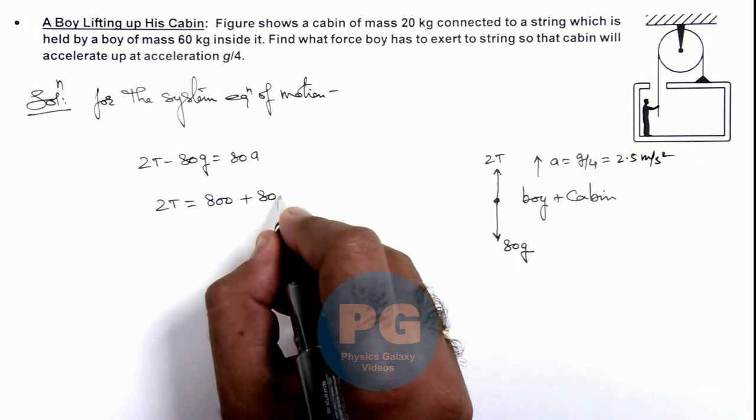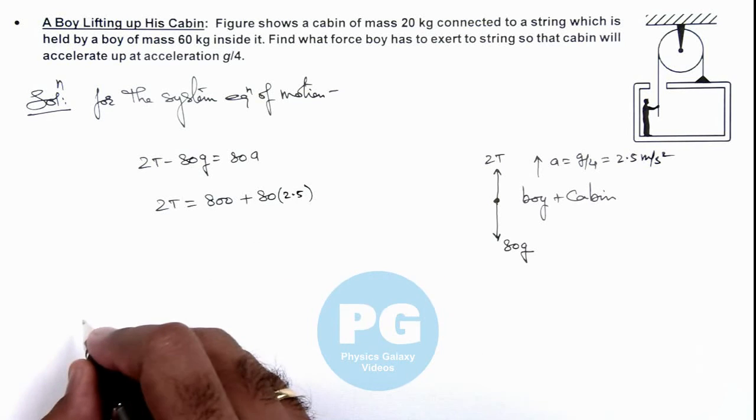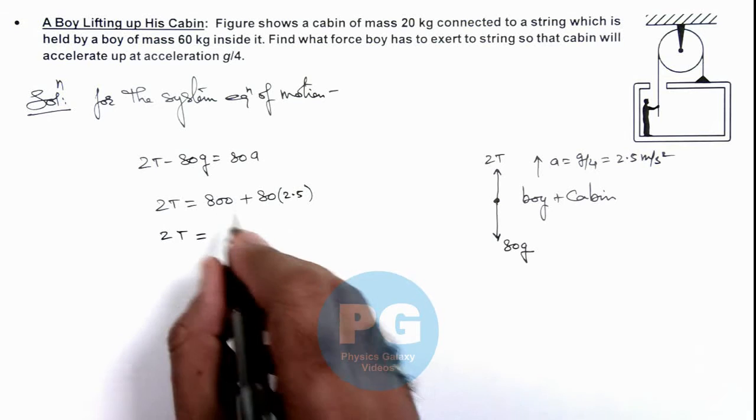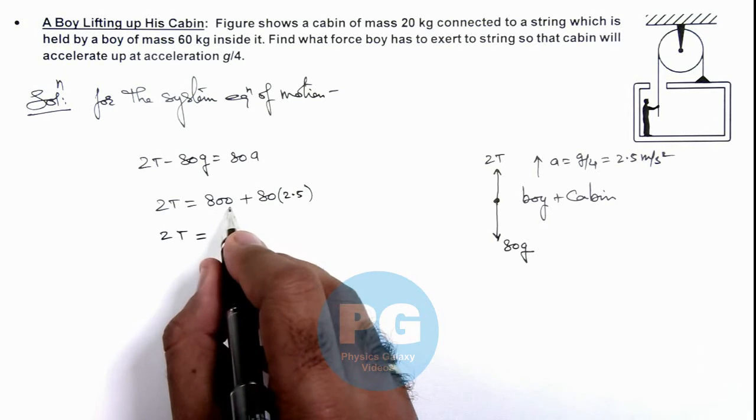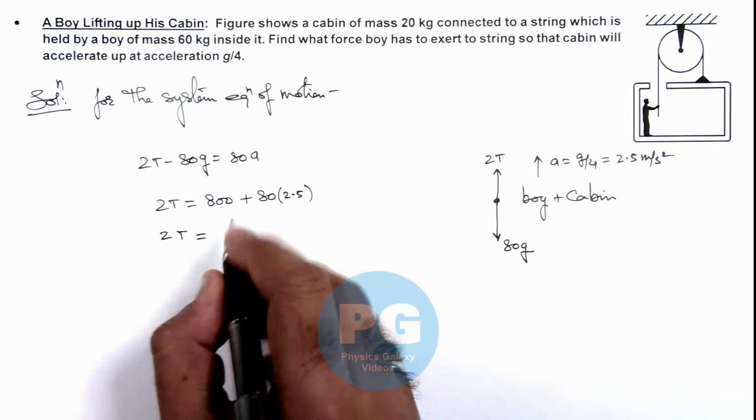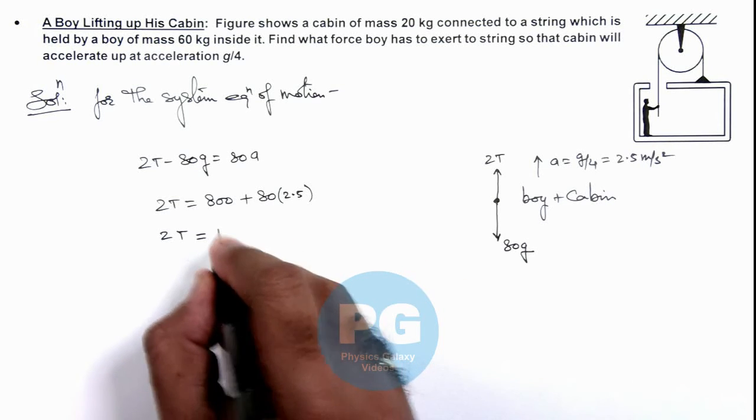So this is 80 multiplied by 2.5. So the value of 2T we are getting is equal to 800 plus this will be 200, so this can be written as 1000 newton.